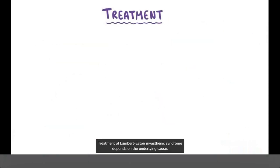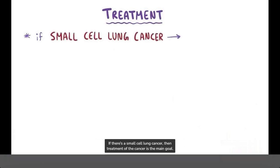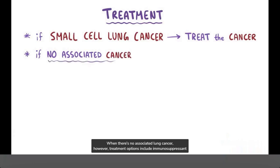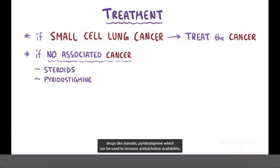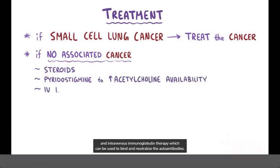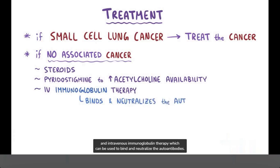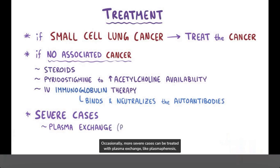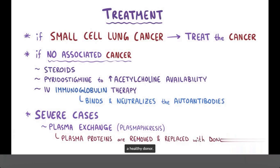Treatment of Lambert-Eaton myasthenic syndrome depends on the underlying cause. If there's a small cell lung cancer, then treatment of the cancer is the main goal. When there's no associated lung cancer, treatment options include immunosuppressant drugs like steroids, pyridostigmine, which can be used to increase acetylcholine availability, and intravenous immunoglobulin therapy, which can be used to bind and neutralize the autoantibodies. Occasionally, more severe cases can be treated with plasma exchange, like plasmapheresis, which is when plasma proteins like antibodies are removed and replaced with plasma from a healthy donor.